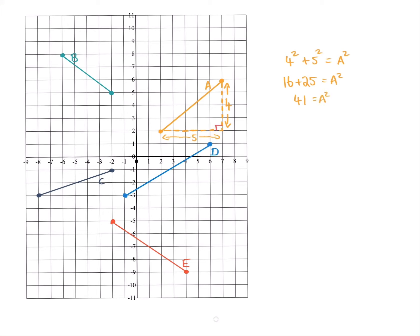Now, I want to find out what A is. I don't want to know what A squared is. I want to know what A is. So what we do is we square root both sides. So the square root of 41 equals the square root of A squared.